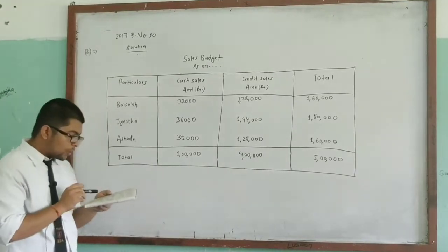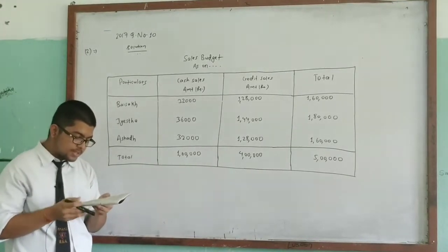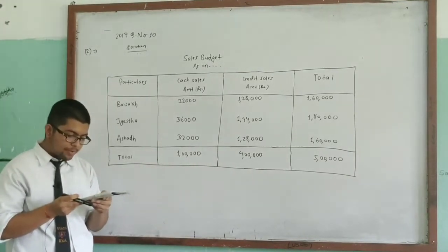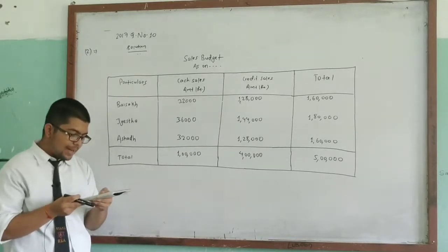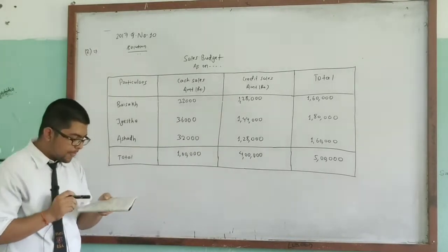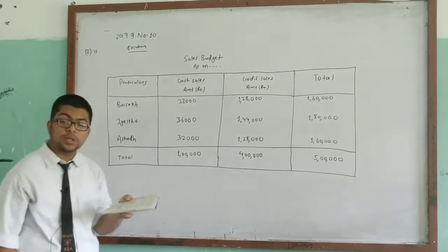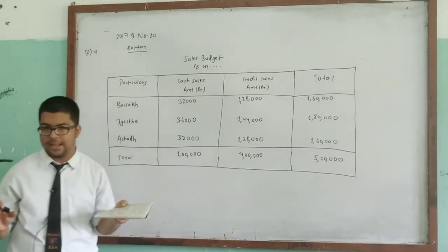Total sales for 6 months including Faagun and Chaitra of 2073 are Rs. 10 lakh, which are apportioned as follows. Total sales is Rs. 10 lakh.